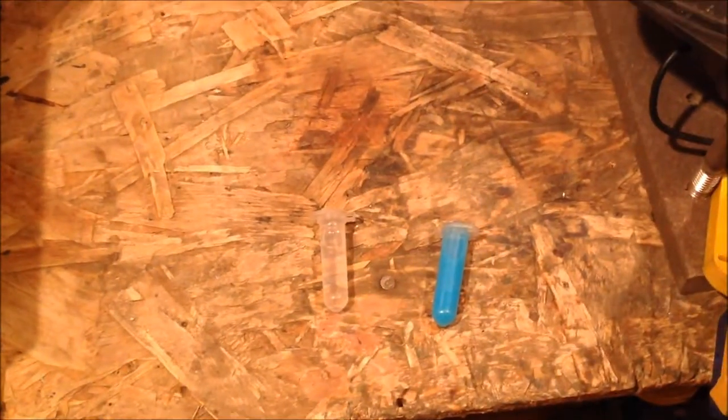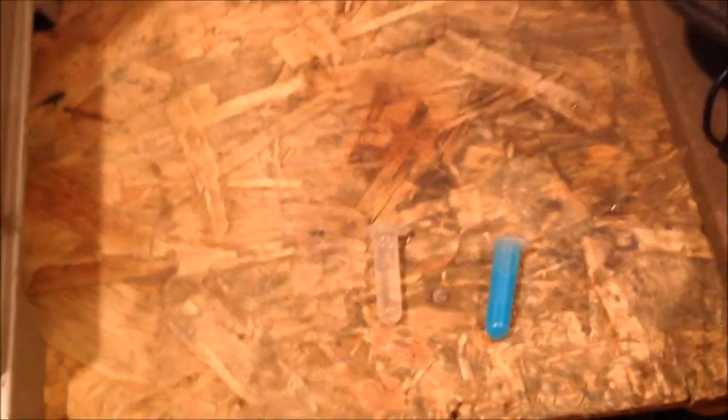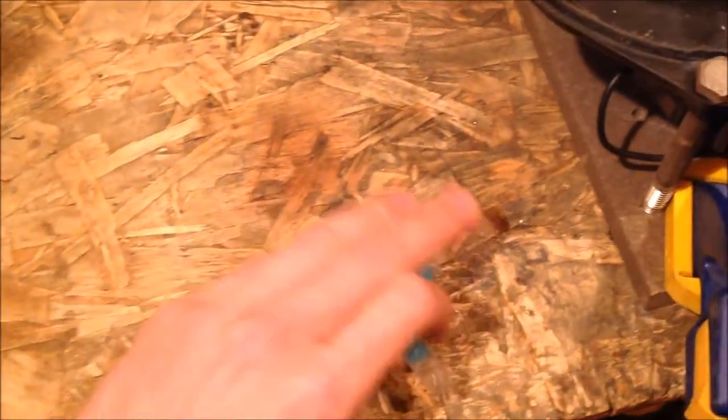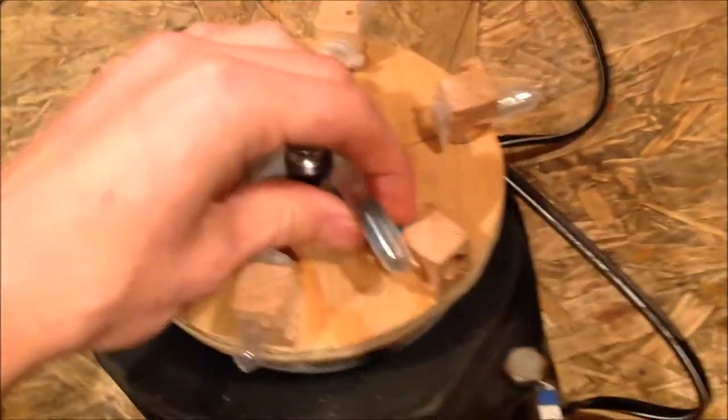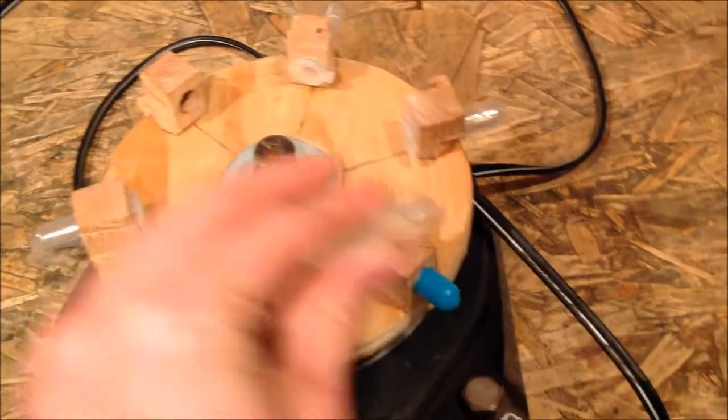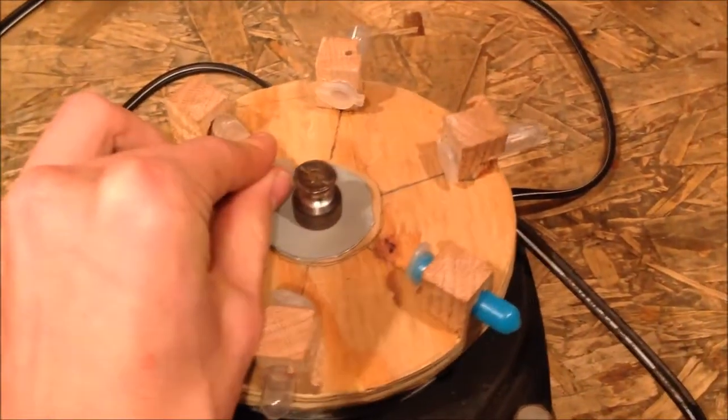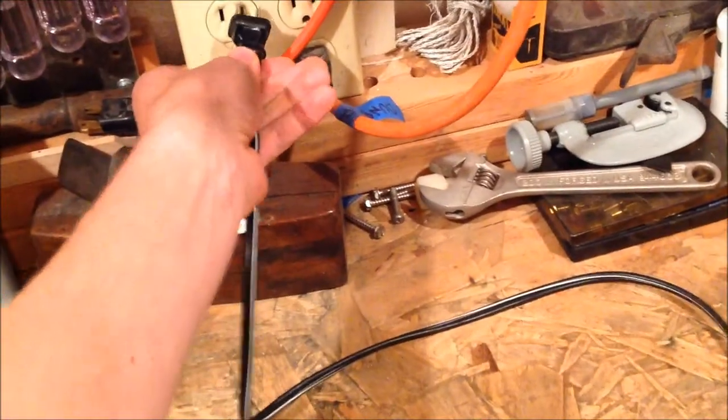I also have a tube full of just plain water, which is necessary to balance the centrifuge. I'll put one tube in each hole opposite each other, and then plug in the centrifuge.